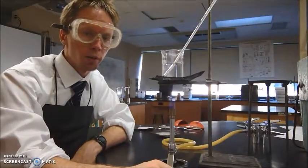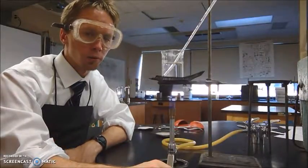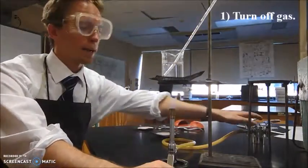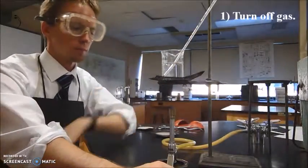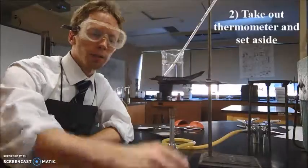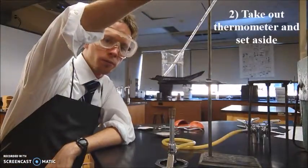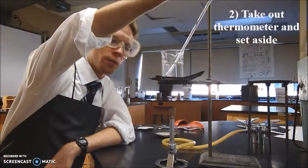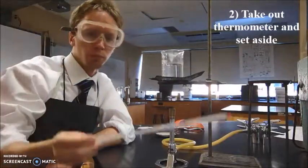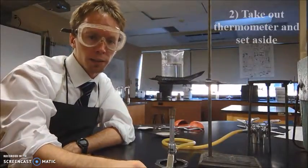When you're done with your measurements, you can clean up as follows. First of all, turn off the gas line from the main gas valve. Next, take the thermometer out. Grab it as far away from the hot part as possible. You can just set that aside.